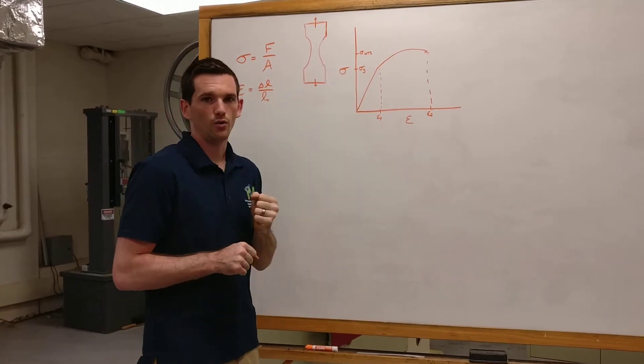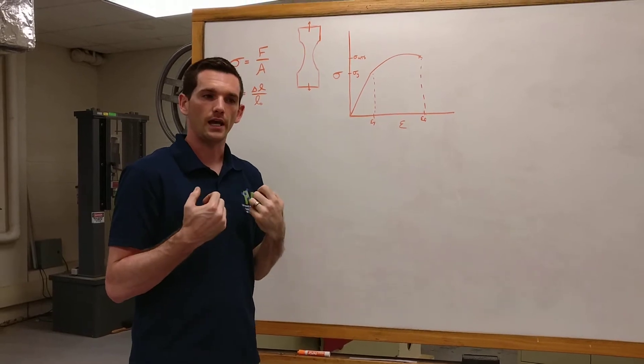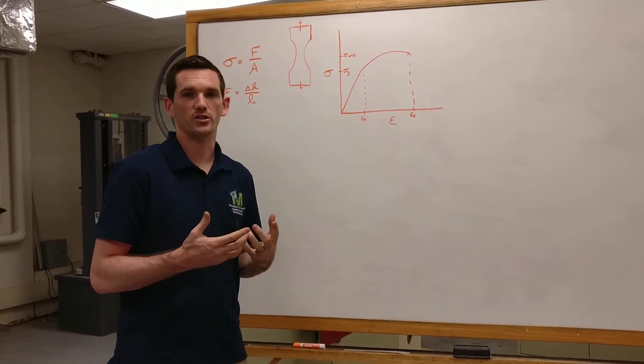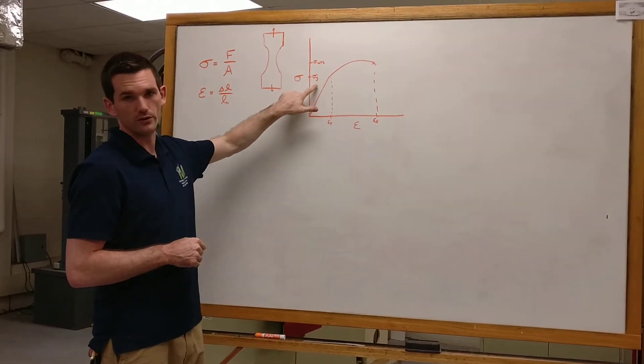At some point, we exceed the limit of those bonds and we start to break those atomic bonds. And after that point, we call it plastic deformation or that deformation is permanent. It won't go back to its original shape. And for that, we call it yield stress.